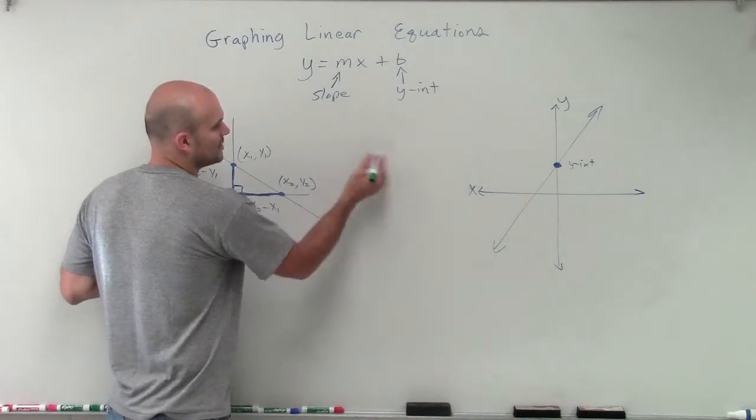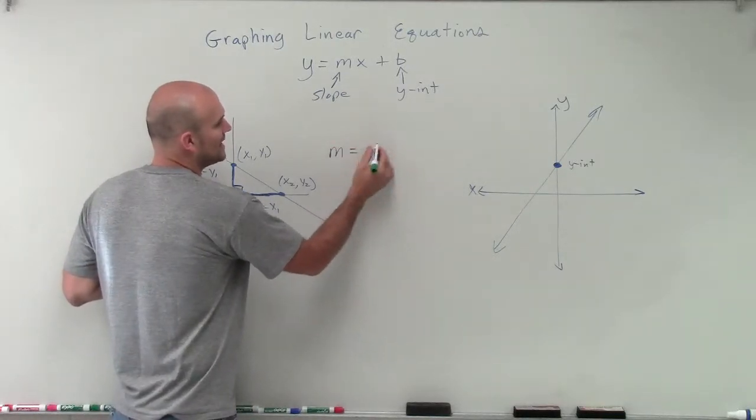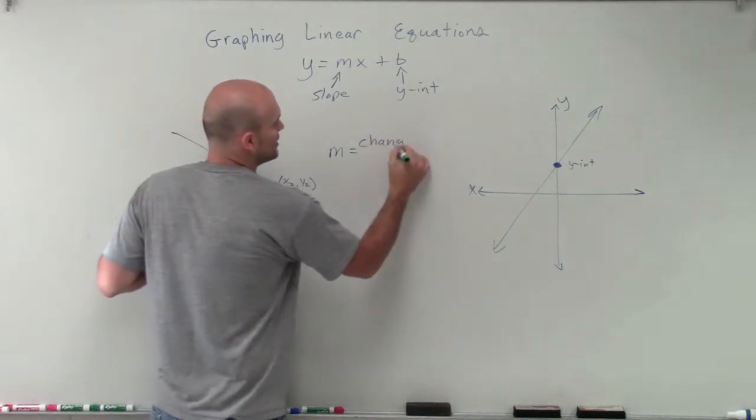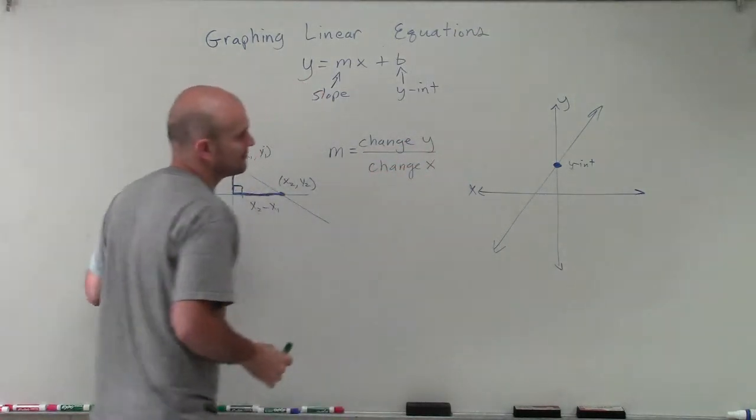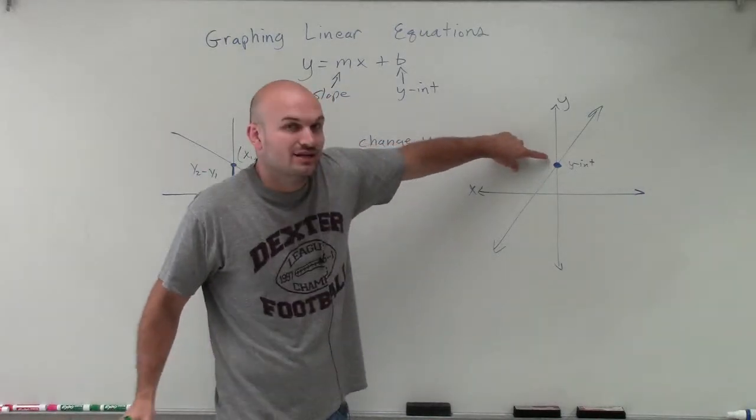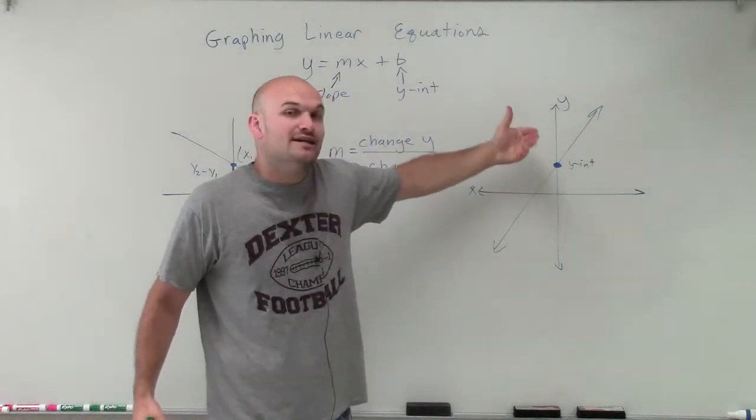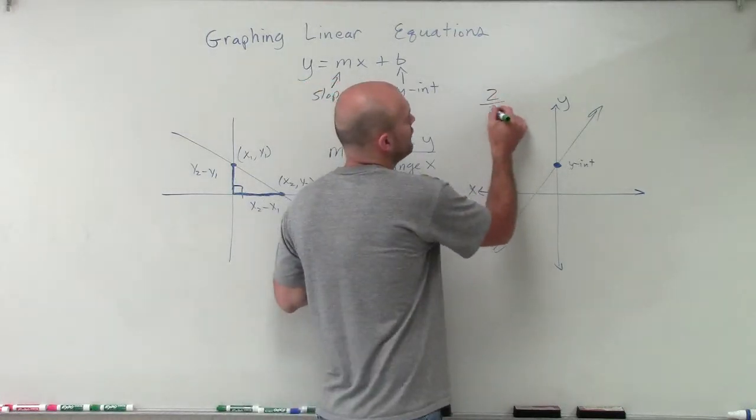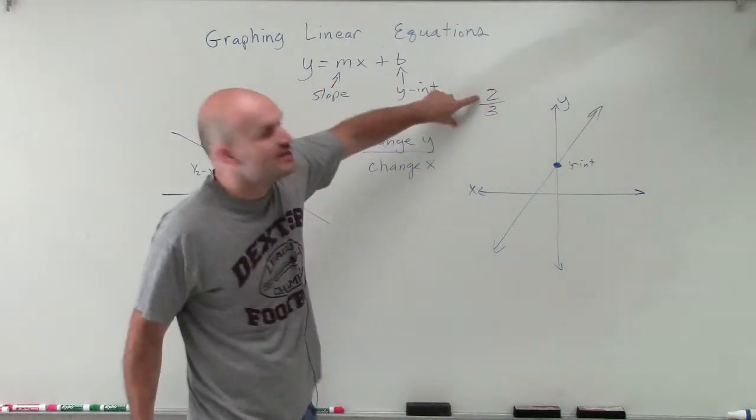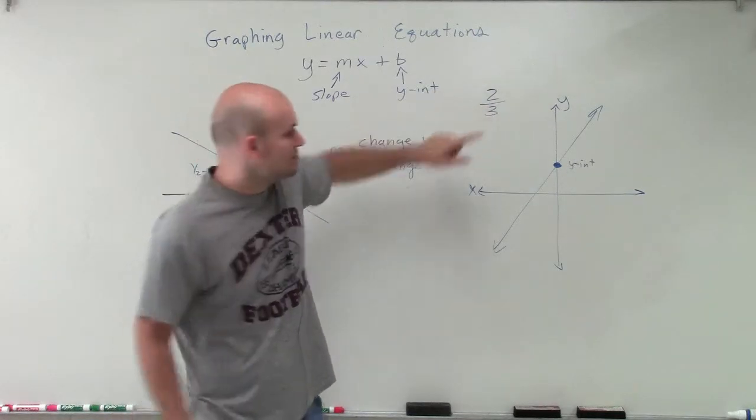Then what that slope tells me is—remember, if I'm given the slope m, that equals the change in your y over the change in your x. So if I'm given one point here, let's say I have the y-intercept and I need to find another point, and I'm given the slope, if that slope is like 2 over 3, that means the change in y is 2 and the change in x is 3.